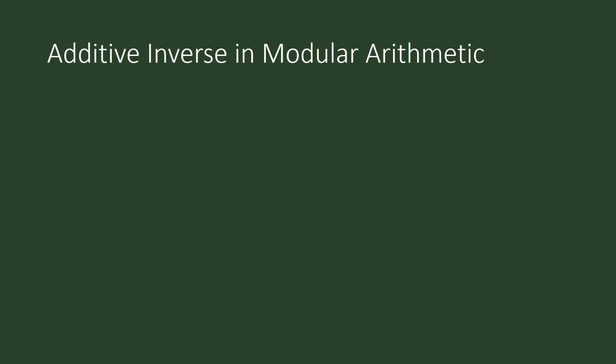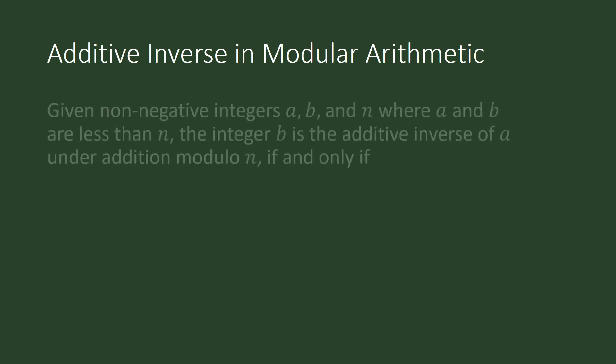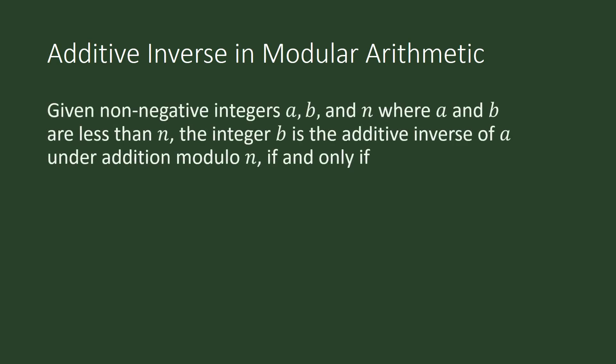Additive inverse in modular arithmetic. Given non-negative integers a and b and n, where a and b are less than n, the integer b is the additive inverse of a under addition modulo n if and only if a plus b is congruent to 0 modulo n.